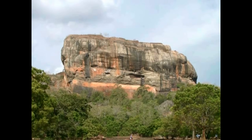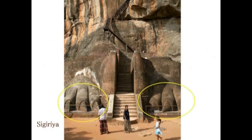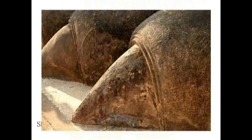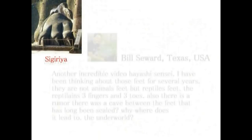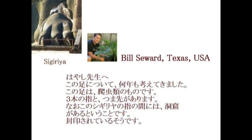シギリアには奇妙な彫刻があります。これが問題の彫刻です。前回この足を調べてみましたが、これはライオンの足ではありません。アメリカのテキサス在住のビル・シーウォードさんから次のようなメールが届きました。これは爬虫類、レプタリアンの足だというのです。しかもこの足と足の間には封印された洞窟があるというのです。